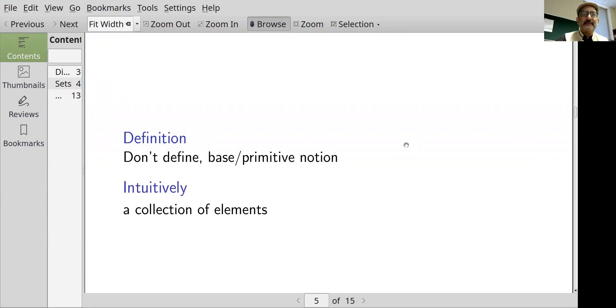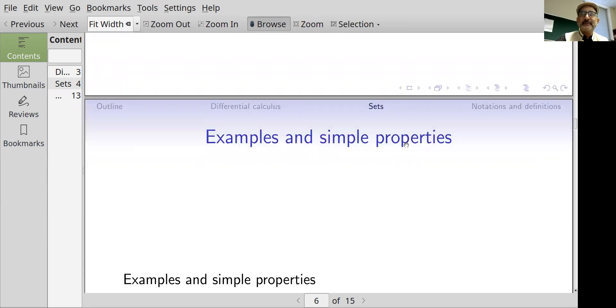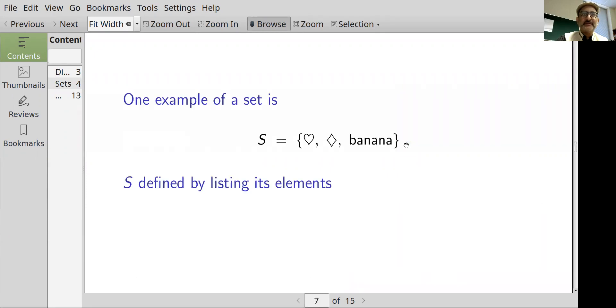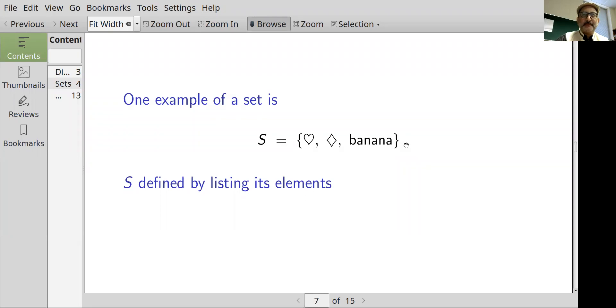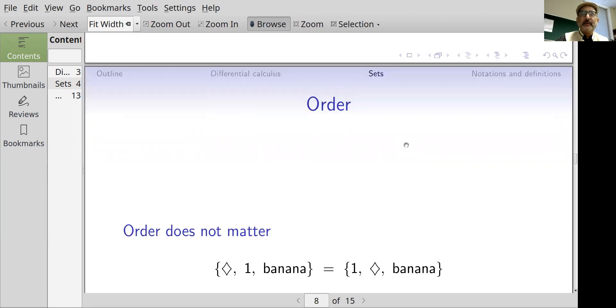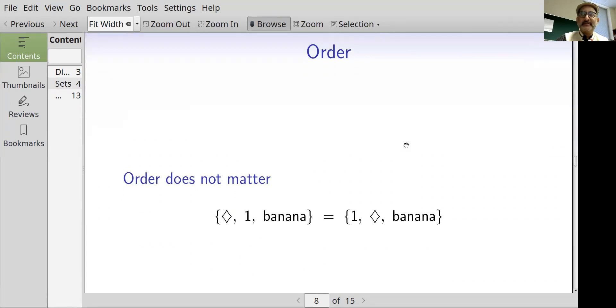Intuitively a set is a collection of elements. We're going to do a few examples and some very simple properties of sets. One example: set S consists of the elements heart, diamond, banana. This set S has been defined by listing its elements. Now the order in which we listed the elements doesn't matter. The set which consists of diamond, one, banana is considered to be the same as the set which consists of one, diamond, banana. The order of the elements within the list does not matter.